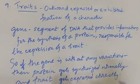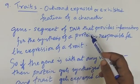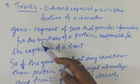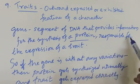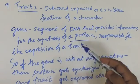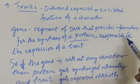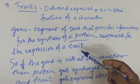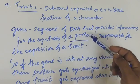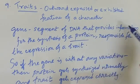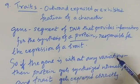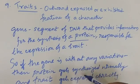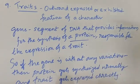So a gene is a segment of DNA that provides information for the synthesis of a protein, which is responsible for the expression of a trait. Protein synthesis is dependent on the correct sequence information of the gene. If the gene is without any variations, protein gets synthesized normally and the trait gets expressed correctly.